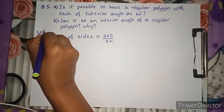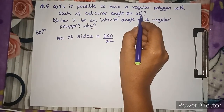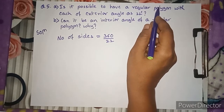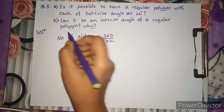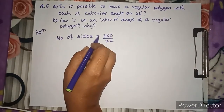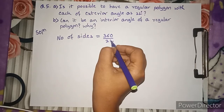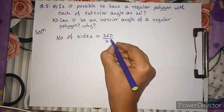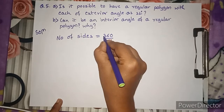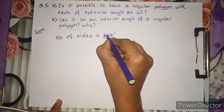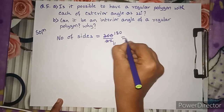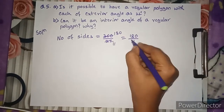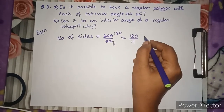Solution. Exterior angle is 22 degrees. For a regular polygon, each side must be equal. We have: number of sides equals 360 divided by each exterior angle. So, 360 divided by 22 gives 180 divided by 11, which is not completely divisible.